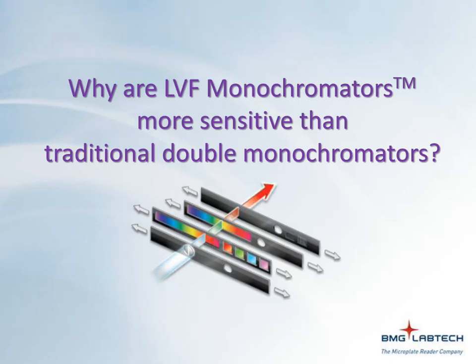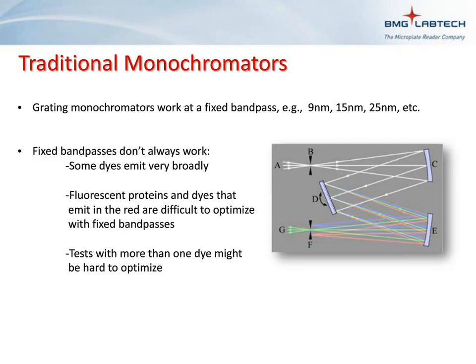Here is a diagram of a traditional monochromator in which light is passed through slits and gratings are used to select the wavelength of light. Since the bandpass in these types of instruments is determined by the slit width as the light exits the monochromator, and this width is usually fixed, the bandpasses for these instruments are usually fixed. This can be detrimental because some dyes emit very broadly, and when you're working with dyes that emit in the red spectrum, they can be difficult to optimize with these fixed bandpasses.